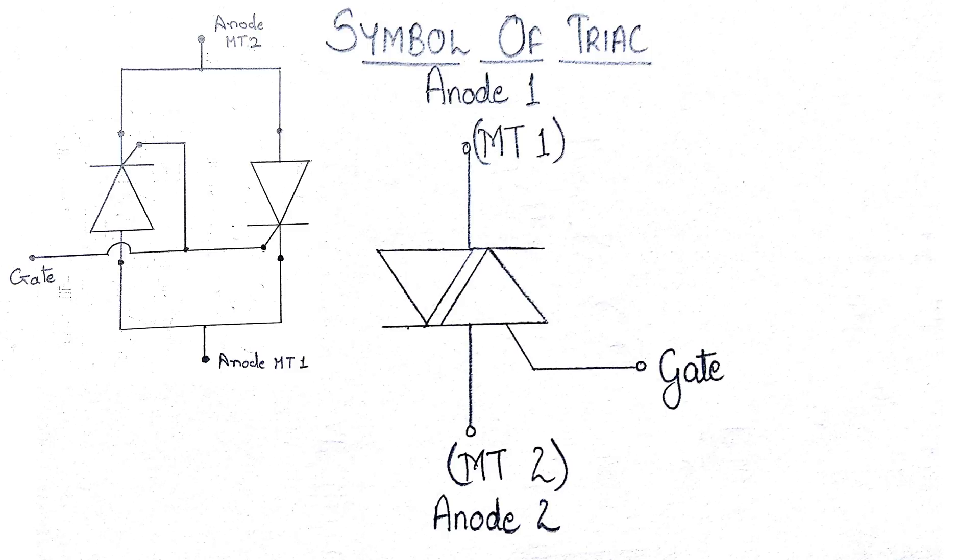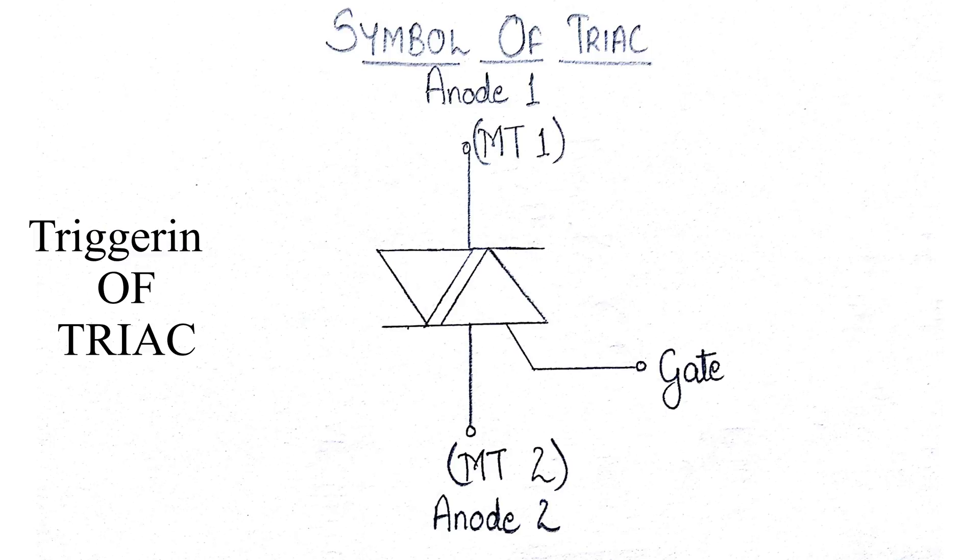Triggering a TRIAC - usually four modes of triggering are possible: a positive voltage at MT2 and positive pulse at the gate, a positive voltage at MT2 and negative pulse at the gate, a negative voltage at MT2 and positive pulse at the gate, or a negative voltage at MT2 and a negative pulse at the gate.